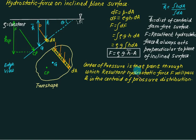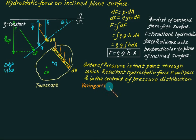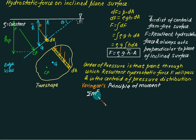The definition first: the center of pressure is that point through which the resultant hydrostatic force will pass. The resultant hydrostatic force is F, it will pass through that point, which is the centroid of the pressure distribution. Initially we have a non-uniform pressure distribution here, and its centroid is the center of pressure. To find the position of this point, that is SCP, we will use Varignon's principle of moments. According to this principle, the sum of moments of all forces about some reference point A must equal the moment of the resultant force about the same reference point.